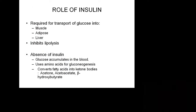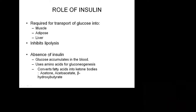Insulin is required for transport of glucose into muscle, adipose tissue, and liver. For the metabolism of glucose and maintenance of normal blood glucose level, insulin is a very important hormone. When insulin is secreted, it inhibits lipolysis. In the absence of insulin, glucose accumulates in the blood — what we call hyperglycemia. The rise in blood sugar comes from amino acids through gluconeogenesis, and fatty acids are converted into ketone bodies — acetoacetate and beta-hydroxybutyrate.